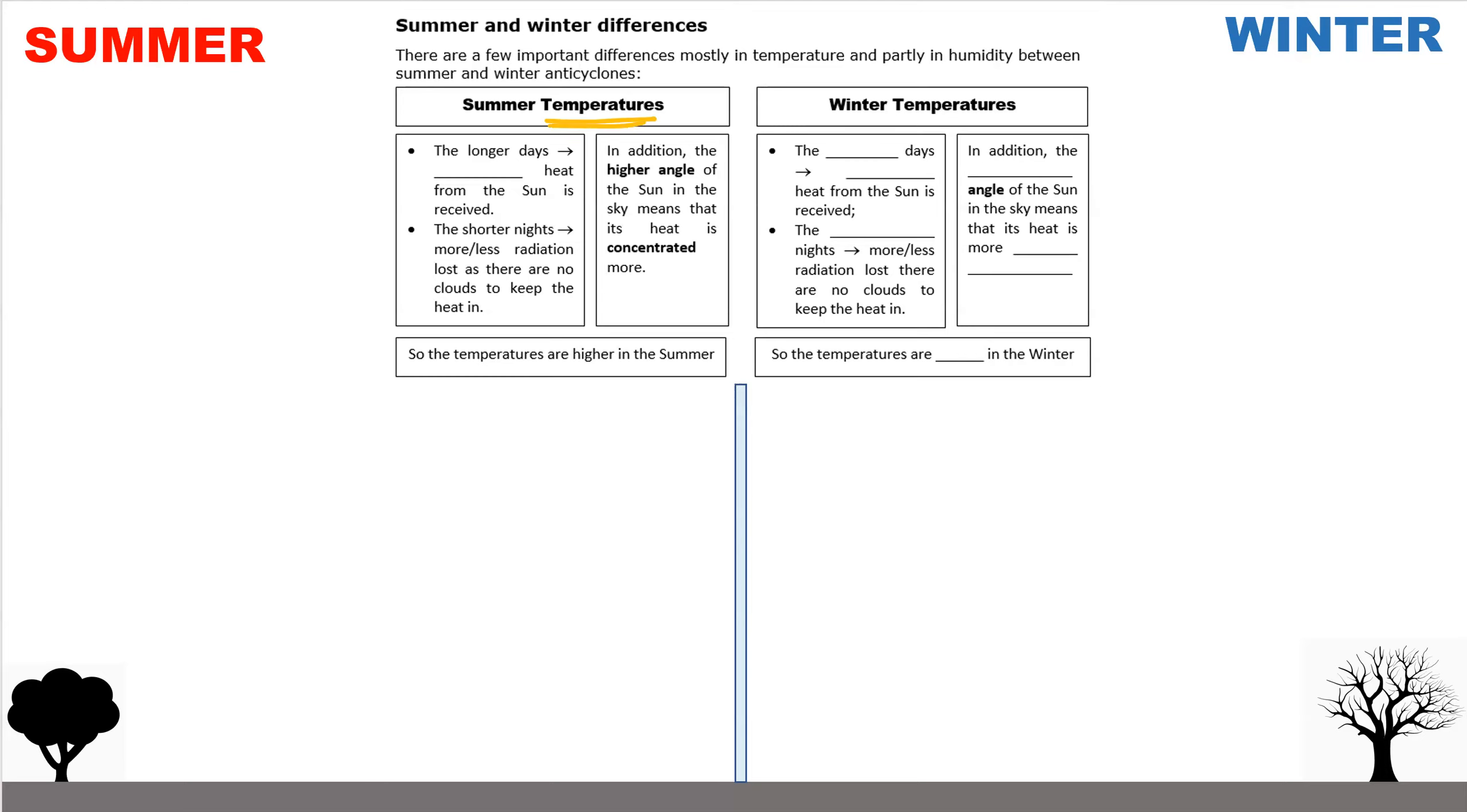In the summer, the temperatures in an anticyclone tend to be very high. And in the winter, the temperatures tend to be very low, very, very cold.